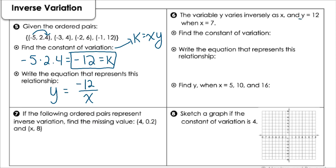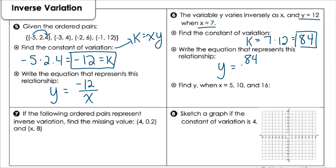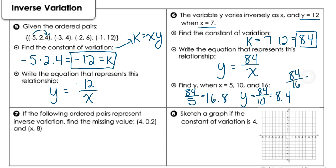Number six is similar, but they give us the y value and the x value for an inverse variation — so read carefully. To find k, I do x times y, and I get 84 for the constant. So the equation is y equals 84 over x. Plugging in values: 84 divided by 5 gives 16.8; 84 over 10 gives 8.4; and 84 over 16 gives 5.25.